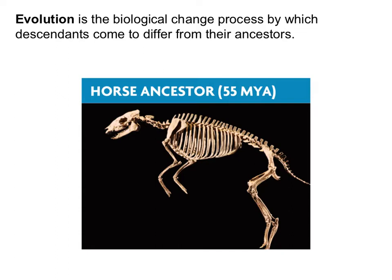Your first term, which is about what this whole unit is about, is evolution. Its technical definition is the biological change process by which descendants come to differ from their ancestors. What that means is how, over many generations, descendants look different than their ancestors did. The key is it happens over a long period of time — thousands to hundreds of thousands to millions of years — over generations, not in a single lifespan.